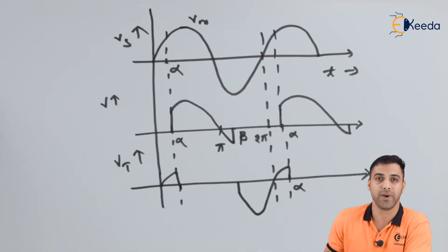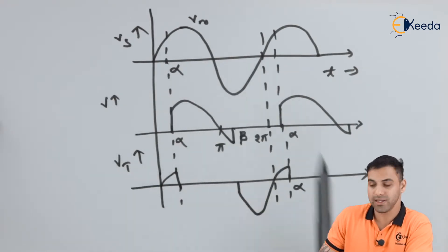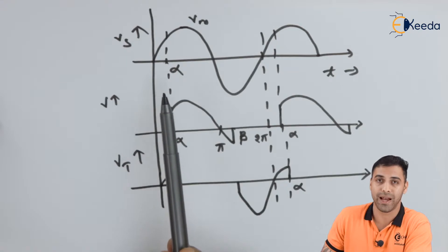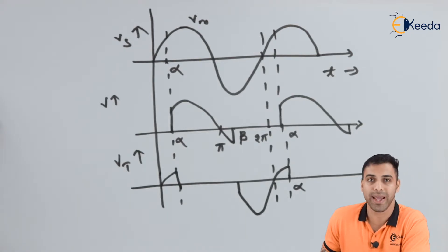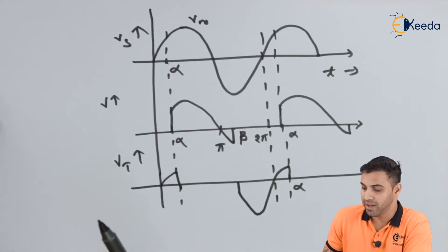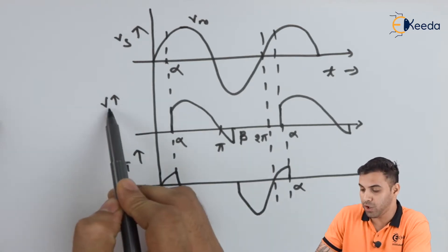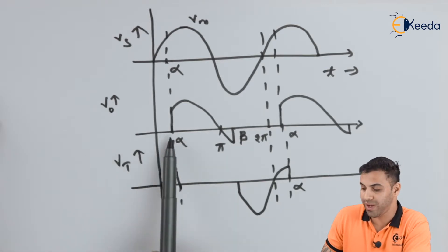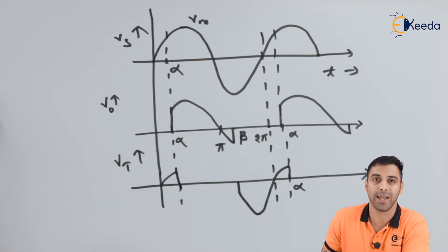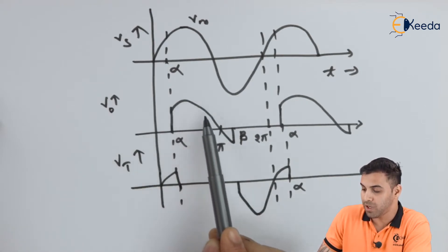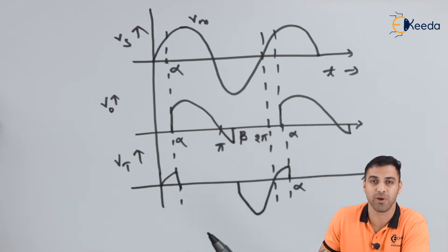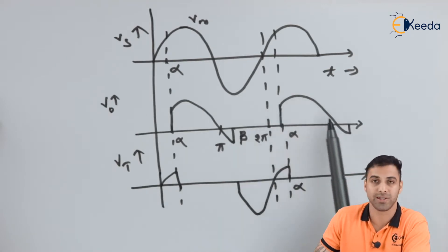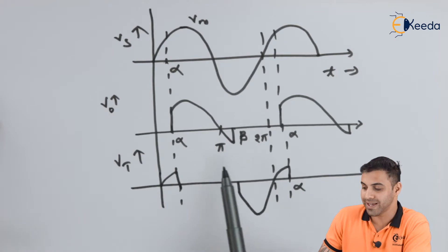Now let's talk about the waveform. If you can see here, this is the source voltage. Alpha is the conduction angle — the angle at which the gate pulse or gate current is given to the gate terminal of the thyristor so that it starts conducting. For the output voltage waveform, let V-not be the output. From zero to alpha, the thyristor does not conduct, so there will be no output voltage. After alpha, the output voltage appears up to angle beta. From beta to the next alpha, there is no output voltage because the thyristor blocks it, and after alpha the output voltage appears again.